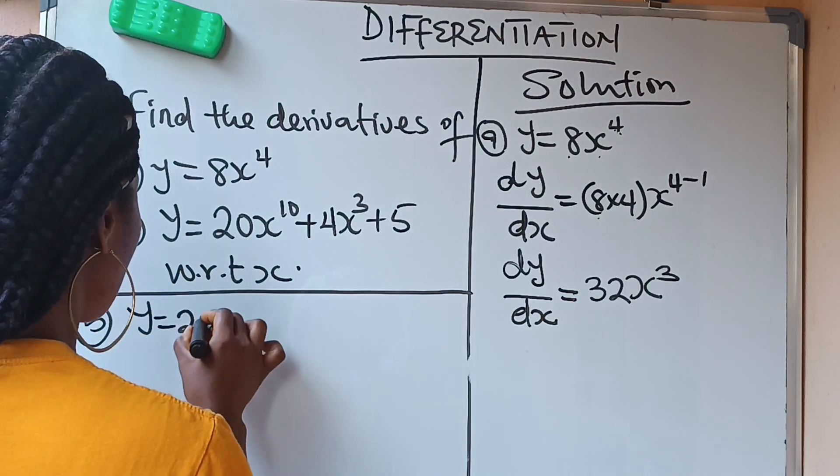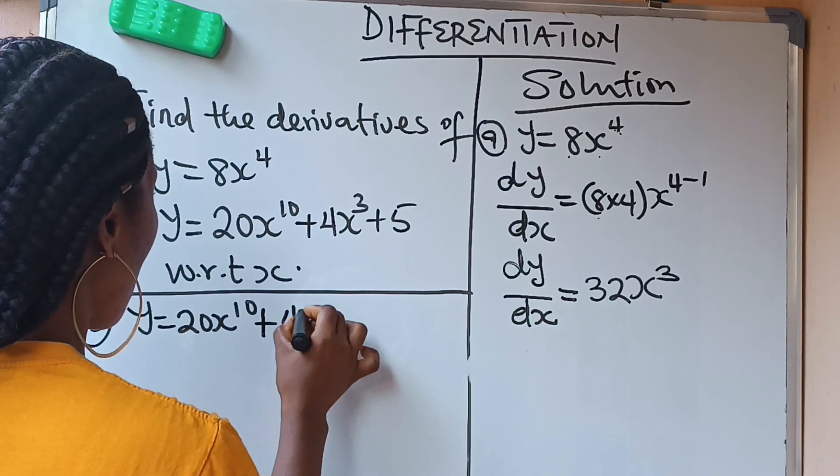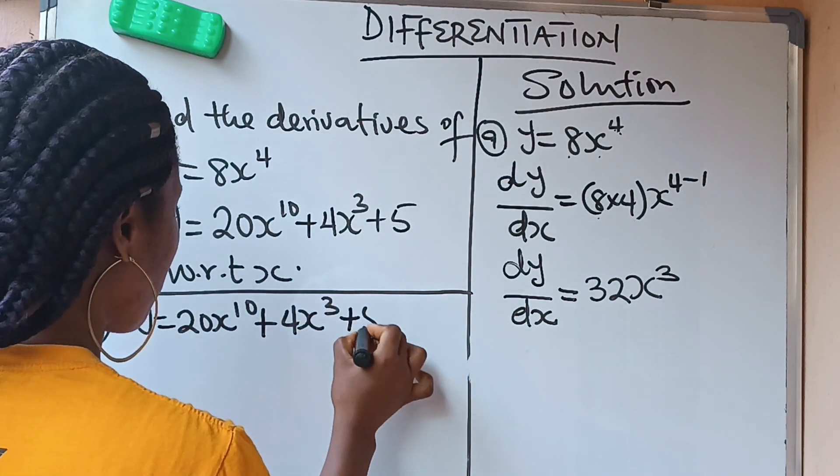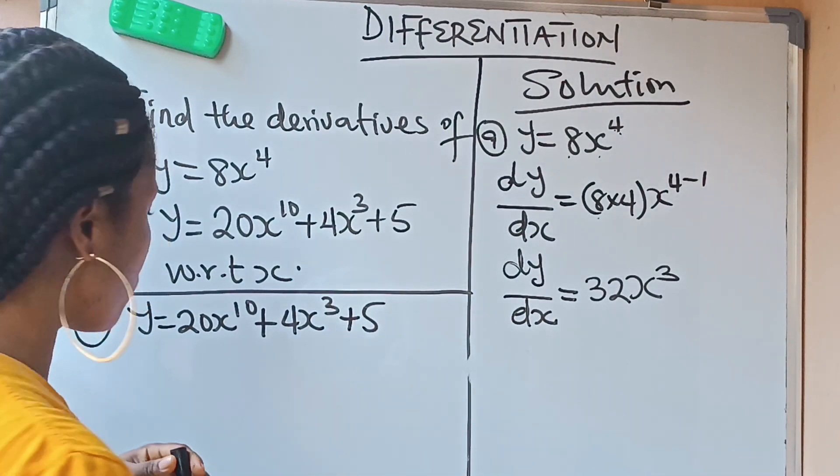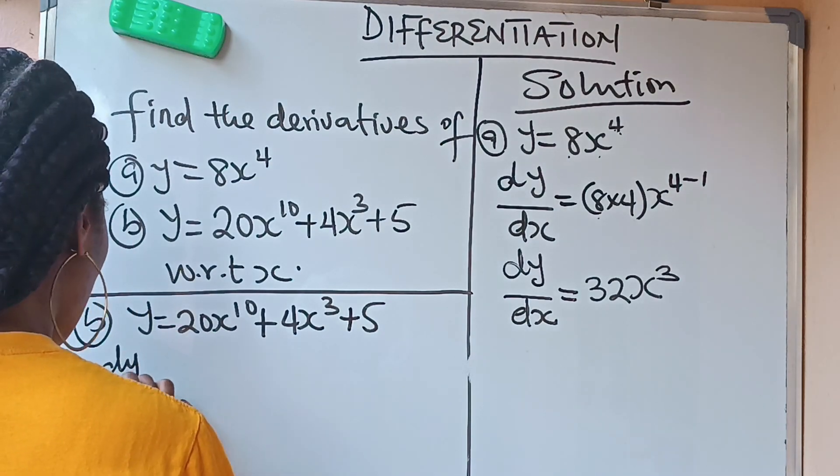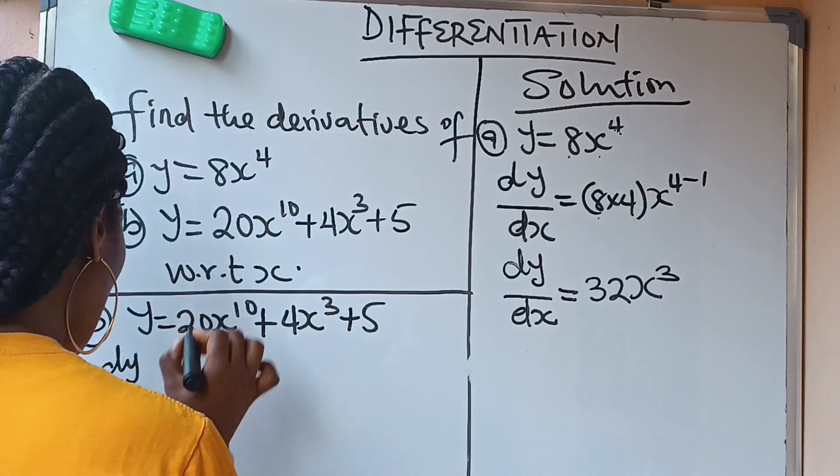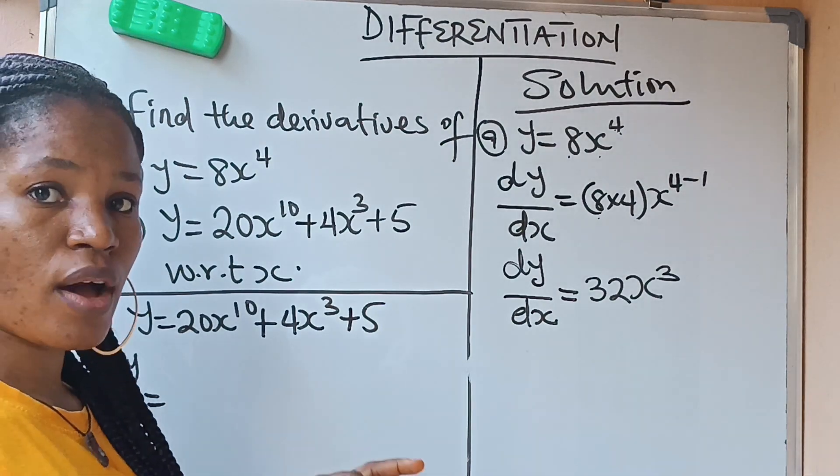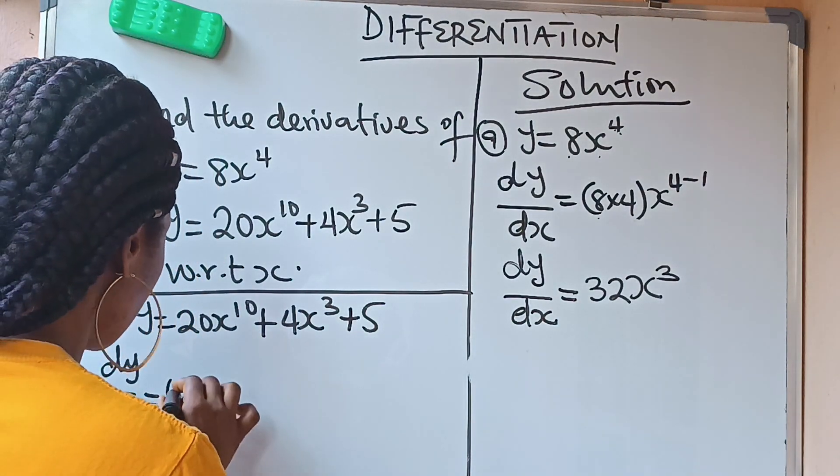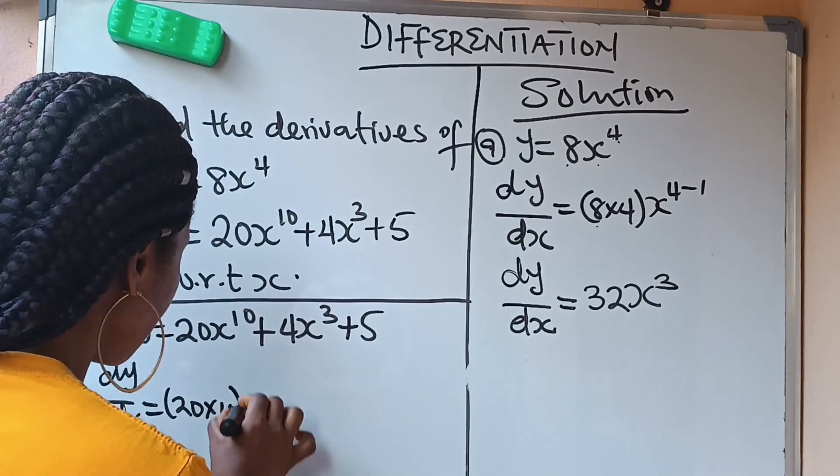We have that what? y is equal to 20x raised to the power of 10 plus 4x raised to the power of 3 plus 5. So as usual, you do your what? dy over dx is equal to, okay? dy over dx is equal to 10 times 20. 20 times 10, like I said.